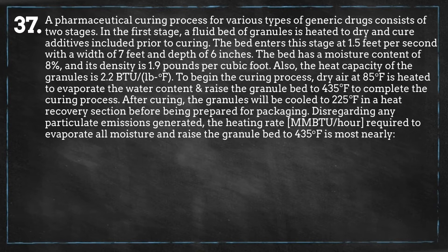Also, the heat capacity of the granules is 2.2 BTU per pound degree Fahrenheit. To begin the curing process, dry air at 85 degrees Fahrenheit is heated to evaporate the water content and raise the granule bed to 435 degrees Fahrenheit to complete the curing process.